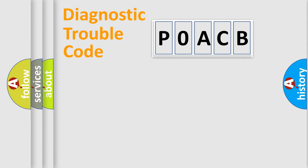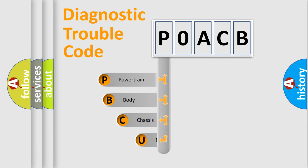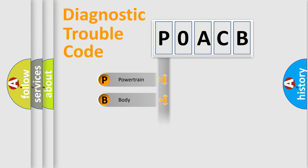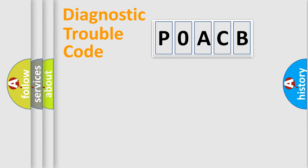First, let's look at the history of diagnostic fault code composition according to the OBD2 protocol, which is unified for all automakers since 2000. We divide the electric system of an automobile into four basic units: Powertrain, Body, Chassis, and Network. This distribution is defined in the first character of the code.